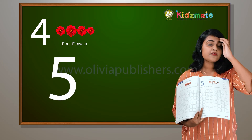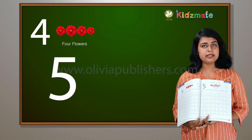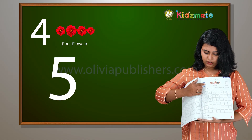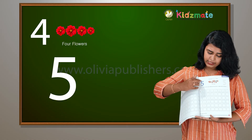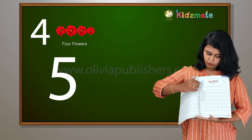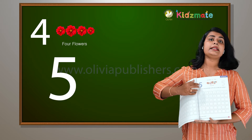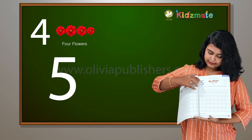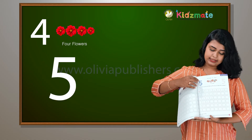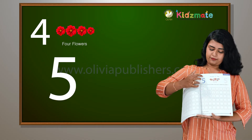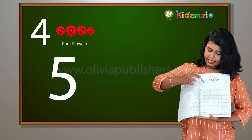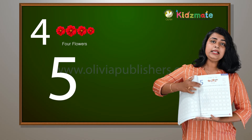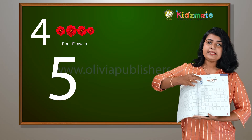Next number is 5. How do you draw 5? Down and curl, and put a dash at the top to make the number 5. Down and curl and put a dash at the top.